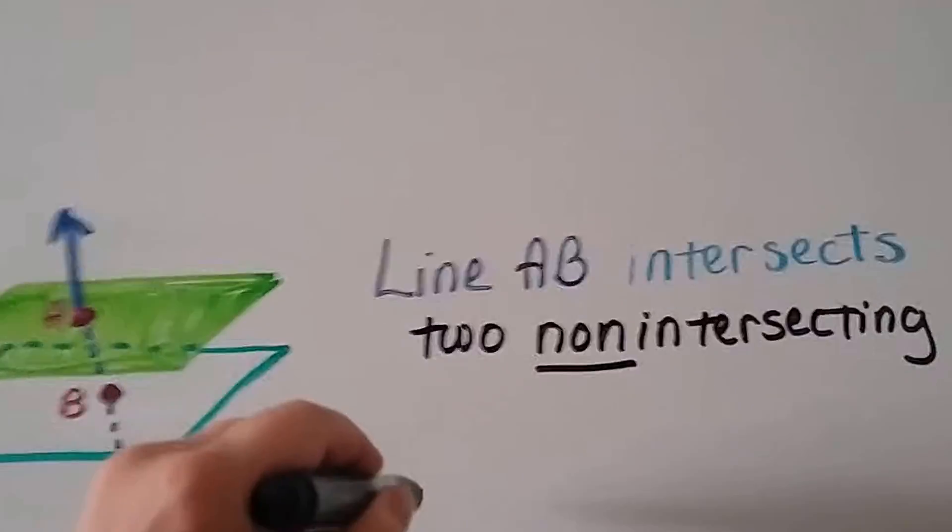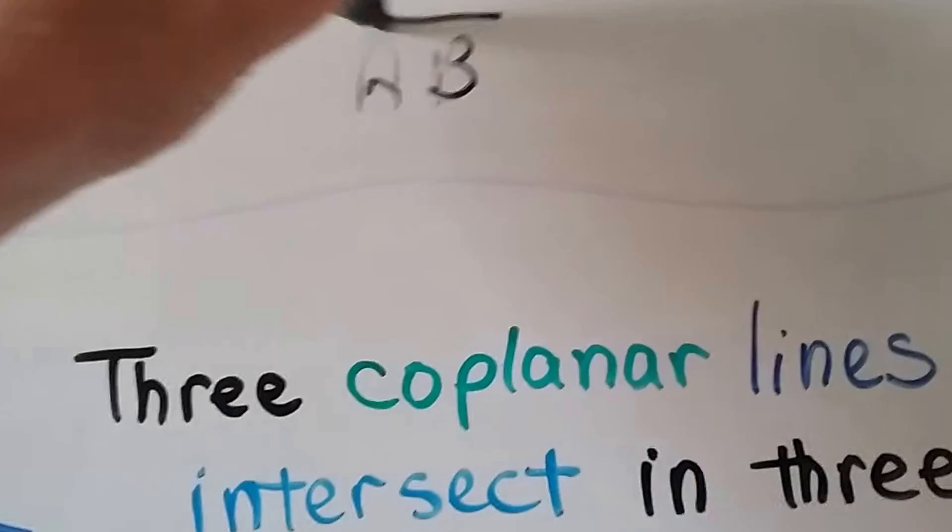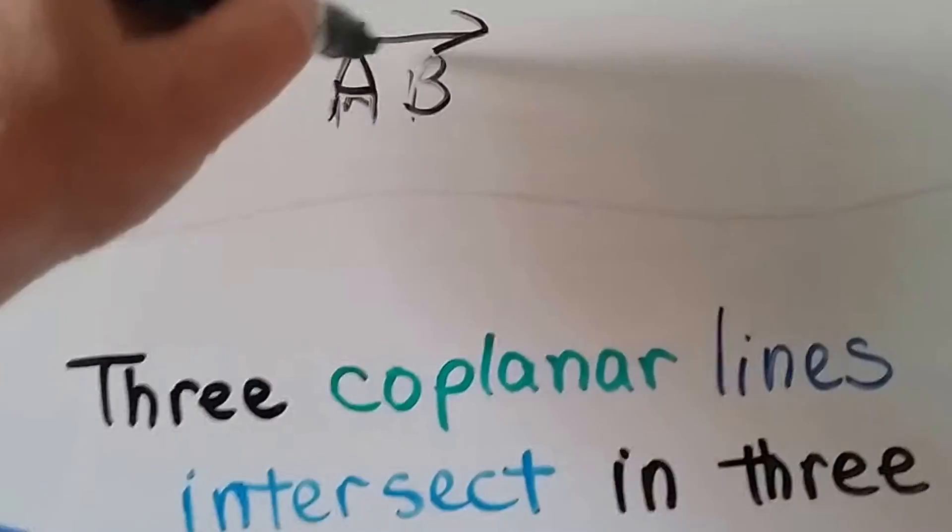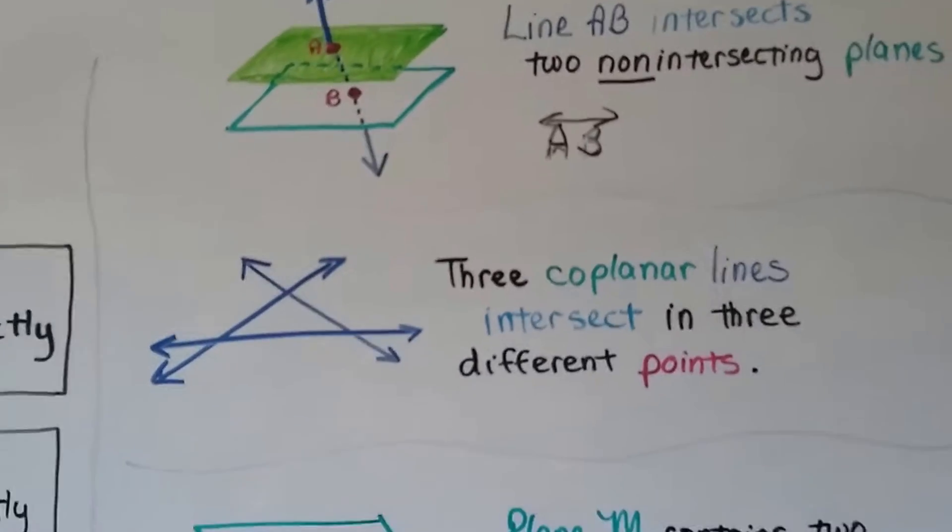We could also have written this as, let's see if my marker works, AB, like that. Right? We could have said line AB. Okay? Sorry, my marker's drying out.